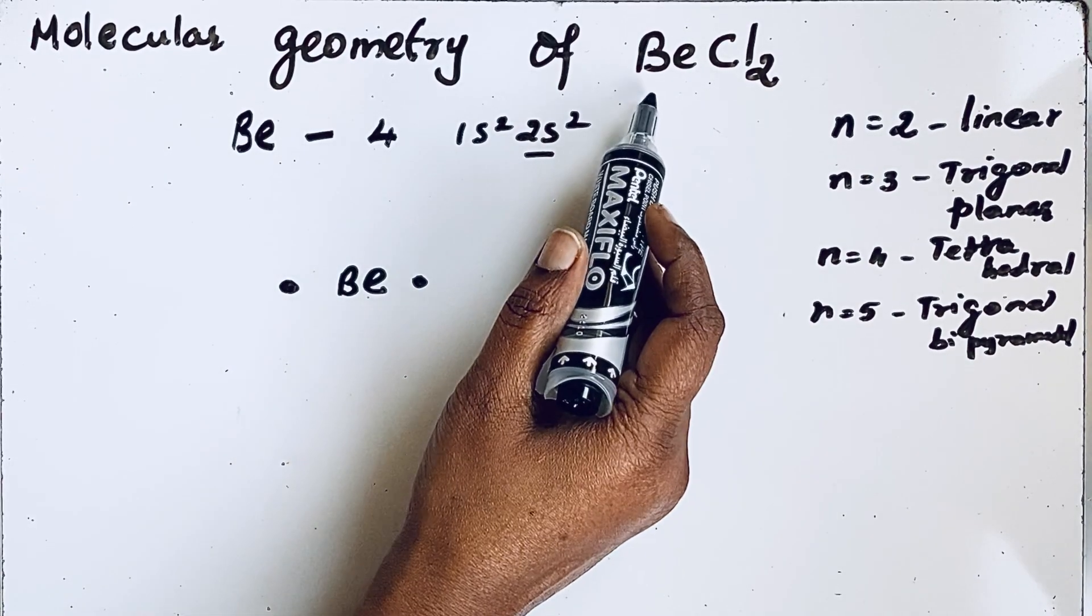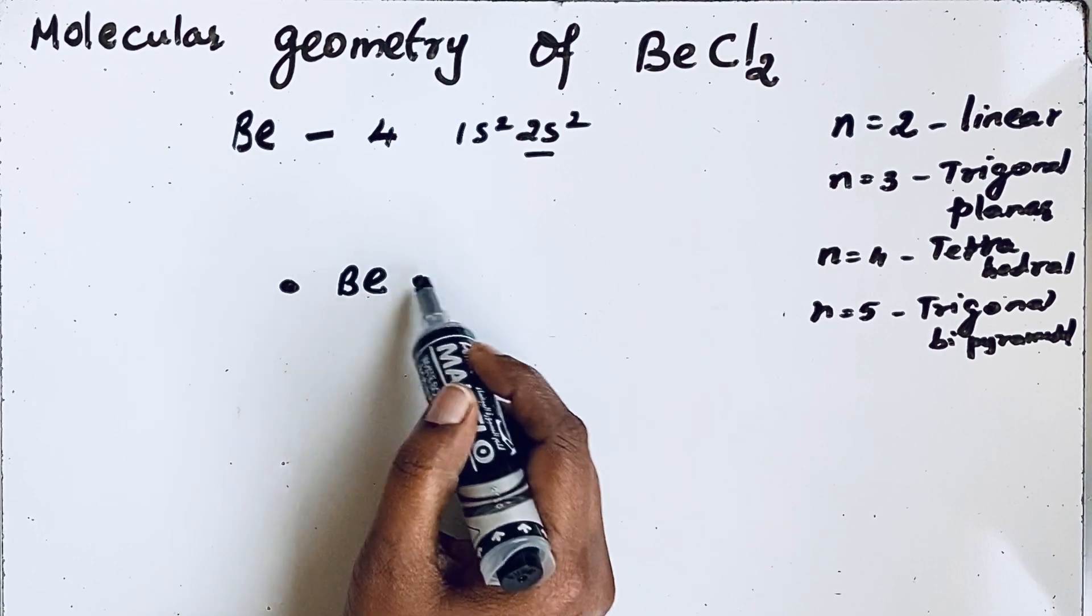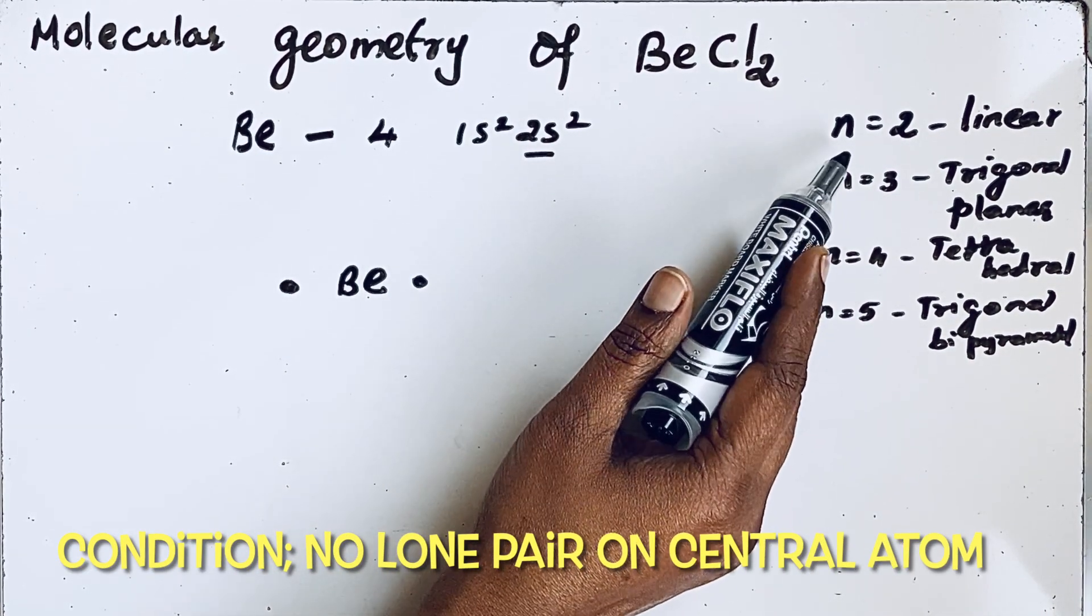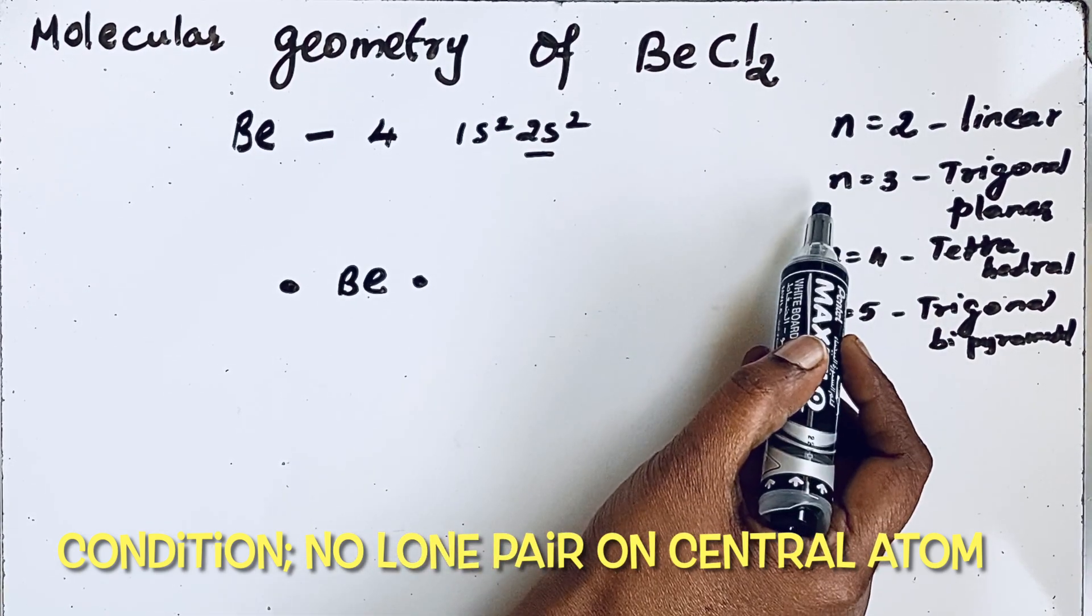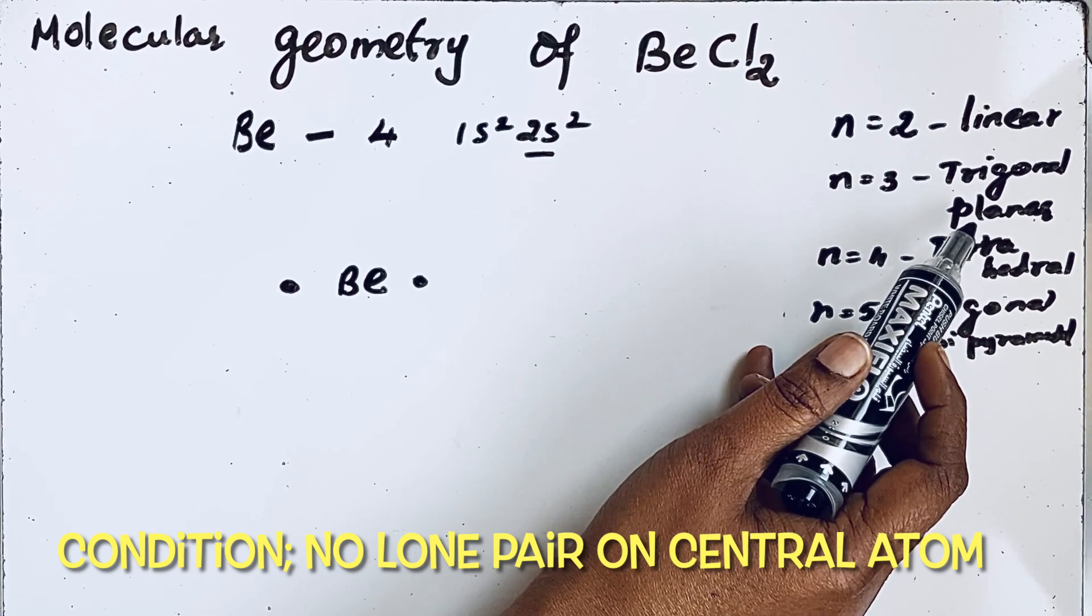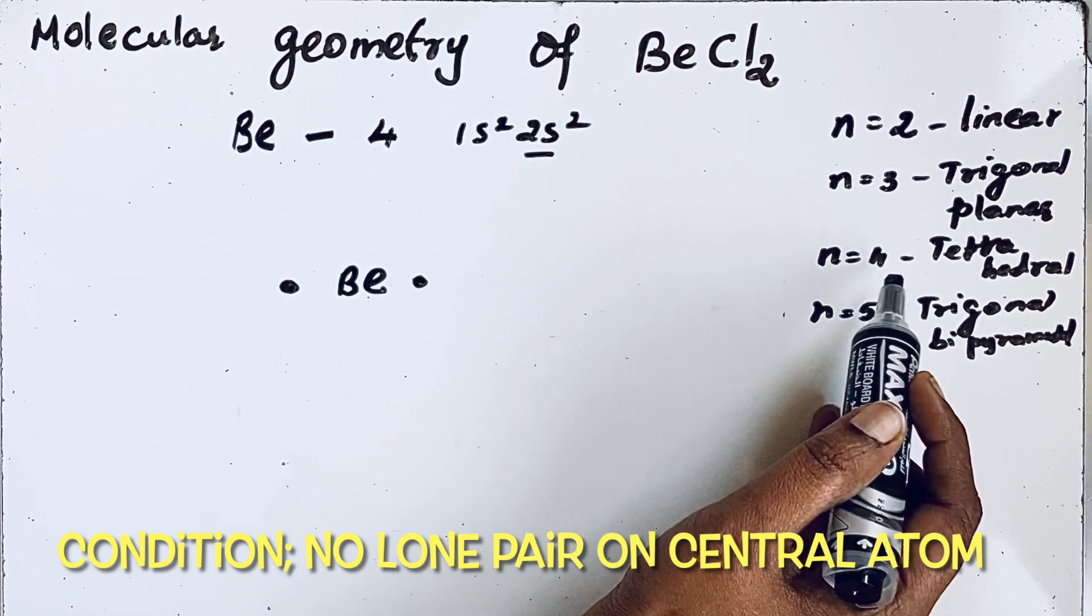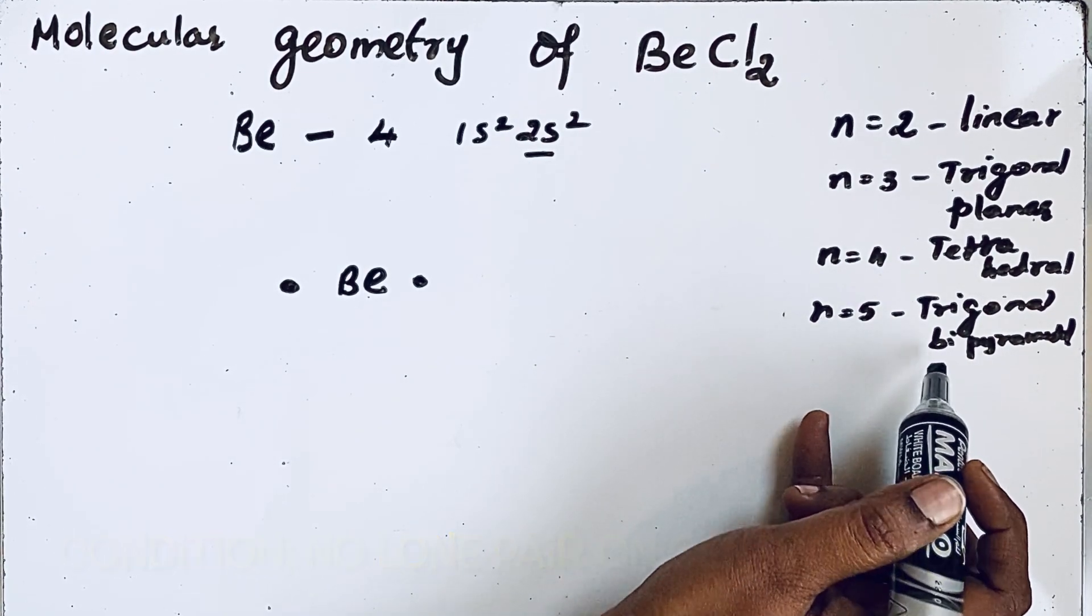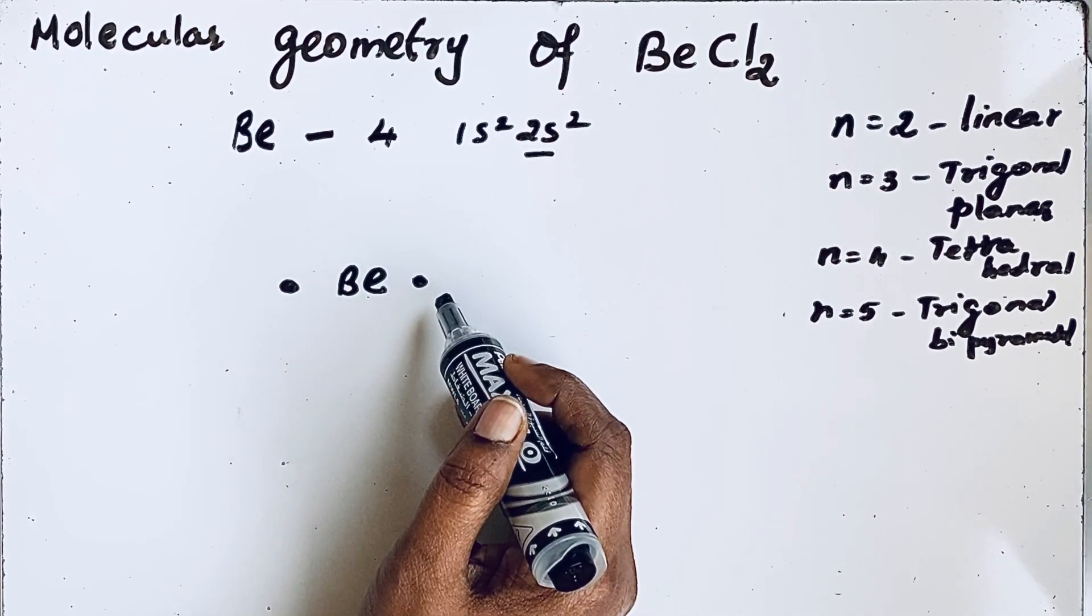In BeCl2 molecule, beryllium is attached to 2 chlorine atoms, so it can form 2 bond pairs. Here, n represents bond pairs. If there are 2 bond pairs, then the geometry is linear. If there are 3, then it is trigonal planar. Let us see how to draw the molecular geometry for BeCl2 molecule.